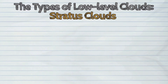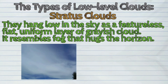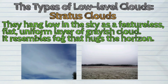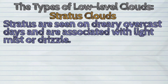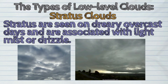Second, the stratus clouds. They hang low in the sky as a featureless, flat, uniform layer of grayish cloud. It resembles fog that hugs the horizon. Stratus are seen on dreary, overcast days and are associated with light mist or drizzle.